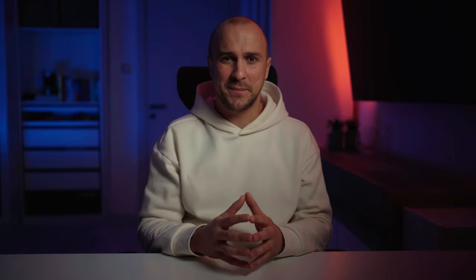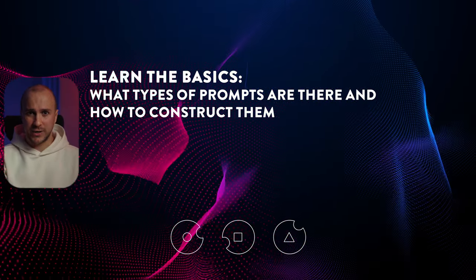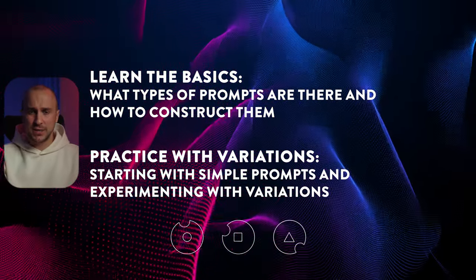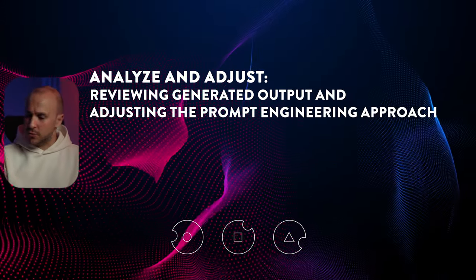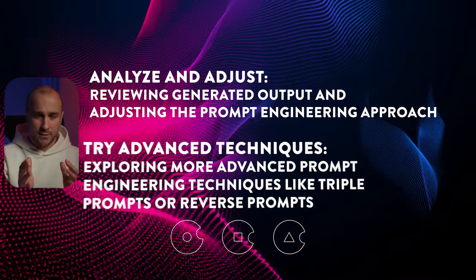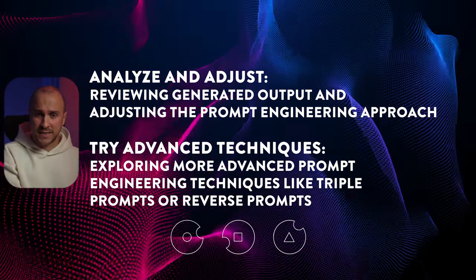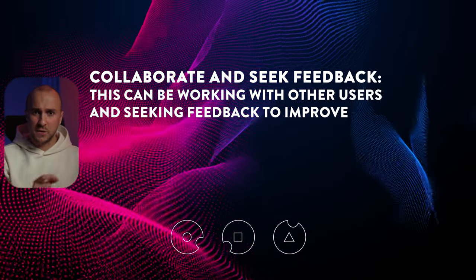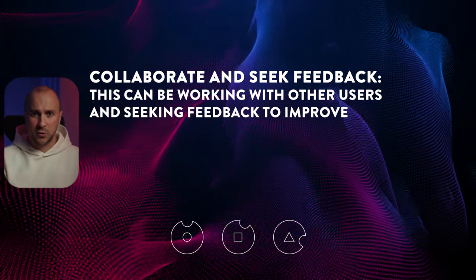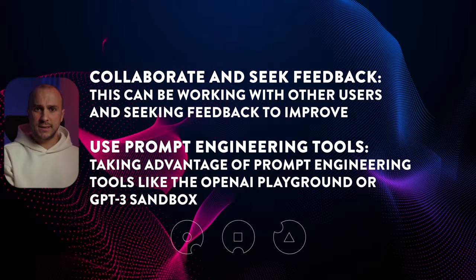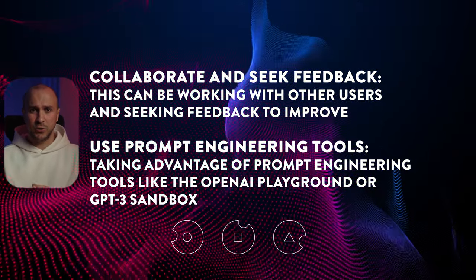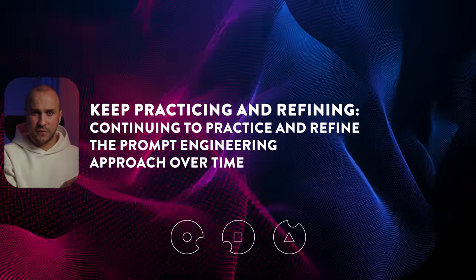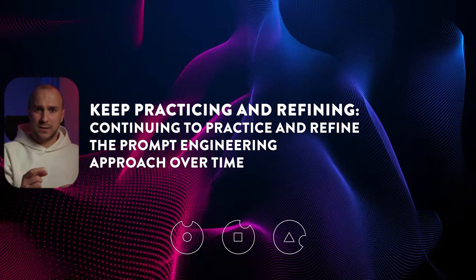What do you need to do to become a master of prompt engineering? Learn the basics — what types of prompts are there and how to construct them. Practice with variations — start with simple prompts and experiment. Then analyze and adjust — review generated output and adjust your approach. Try advanced techniques like triple prompts or reverse prompts. Collaborate and seek feedback from other users. Use prompt engineering tools like the OpenAI Playground or Sandbox. And lastly, keep practicing and refining your approach over time to see what works for you.